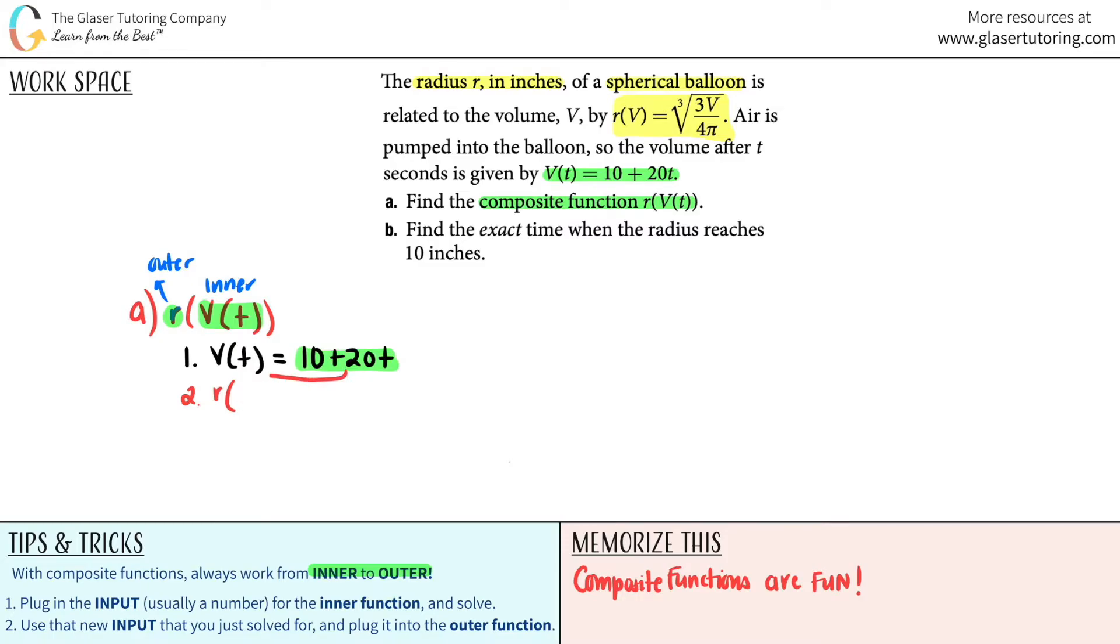So I'm literally going to plug in that 10 plus 20t into my r function, which means that any time that I see a variable, I need to plug in this and not just the variable.